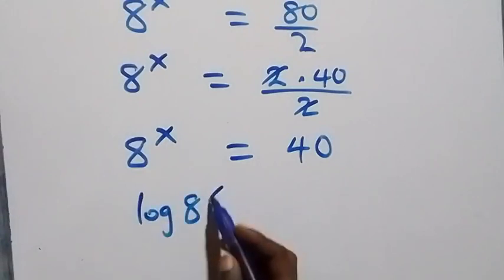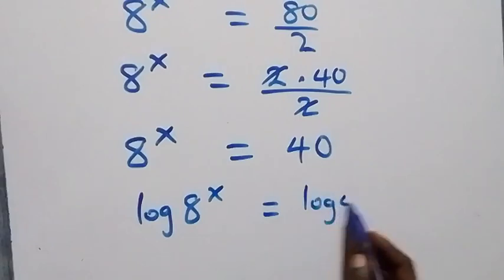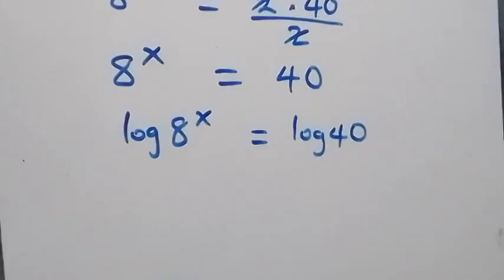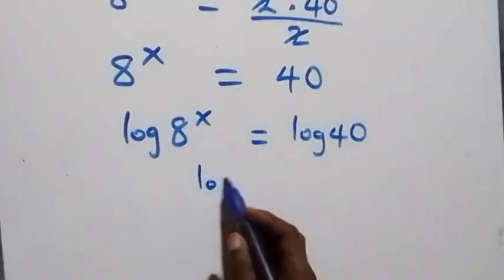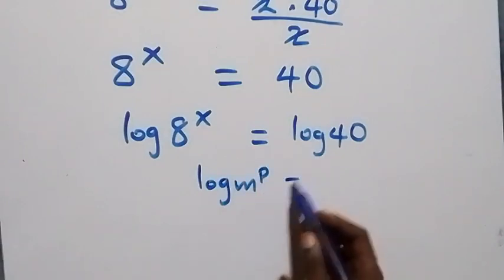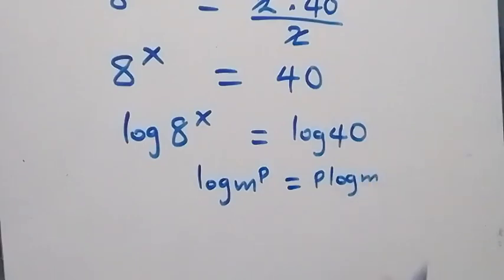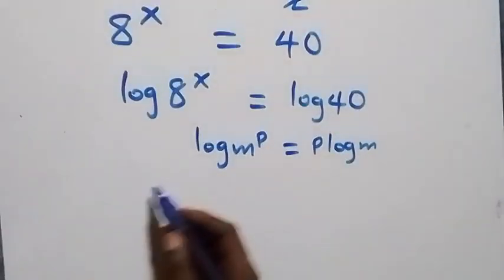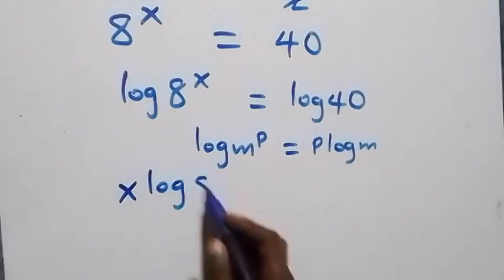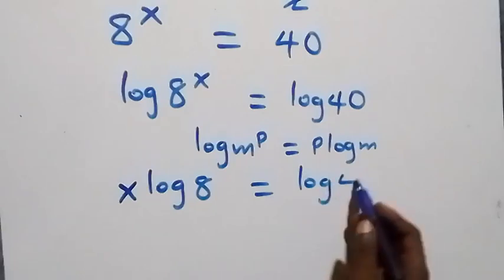We have log of 8 raised to power x equals log 40. Then we apply the power rule of logarithm: log of m raised to power p is the same as p times log m. So this becomes x·log 8 equals log 40.